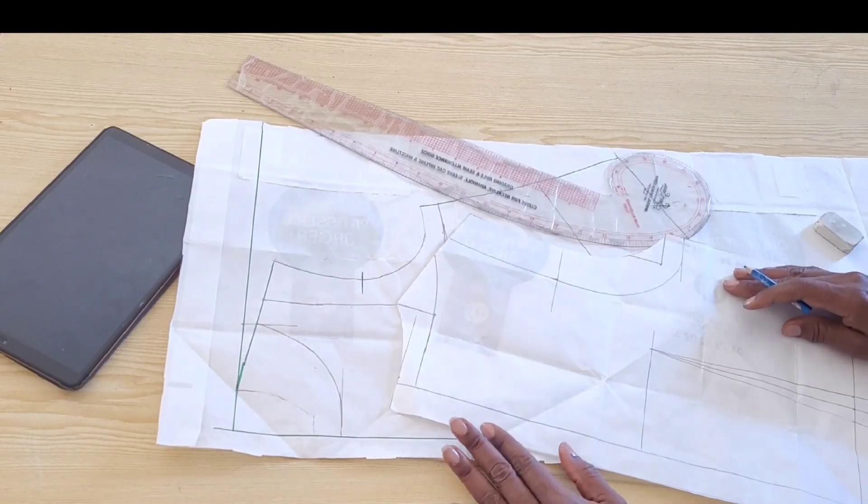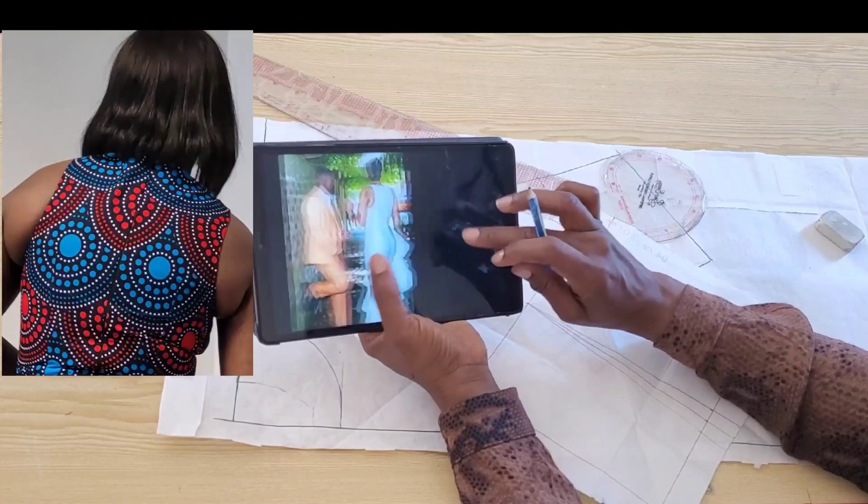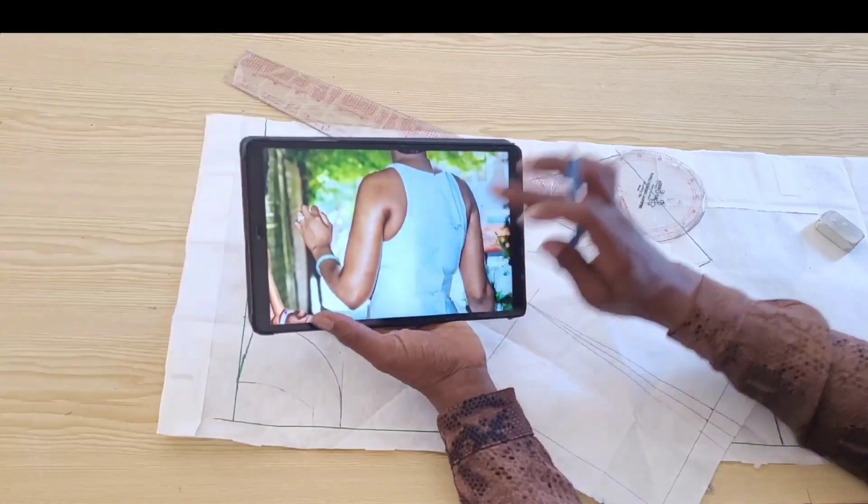So this is what the back armhole curve looks like on my client as well. With this, you have an idea on how to go about yours.